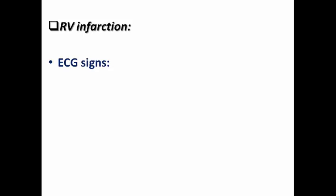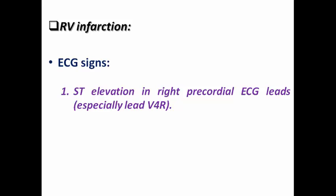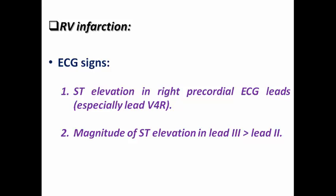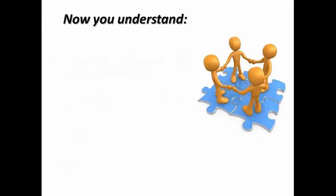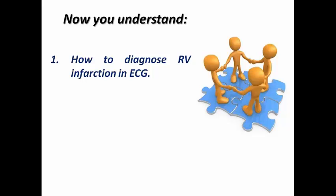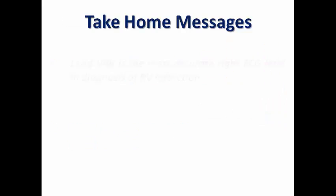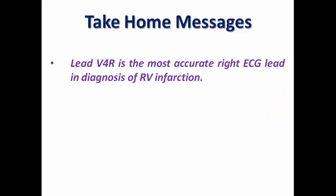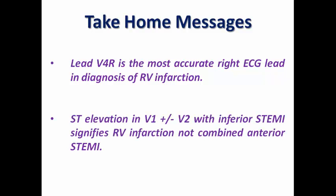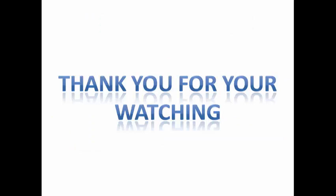To summarize the ECG signs of RV infarction: first, ST elevation in right precordial ECG leads, especially lead V4 right; second, magnitude of ST elevation in lead 3 greater than in lead 2; and third, ST elevation in V1 more than 2 mm, plus or minus V2. Our take-home message: lead V4 right is the most accurate right ECG lead for diagnosing RV infarction, and ST elevation in V1 plus or minus V2 with inferior STEMI signifies RV infarction, not combined anterior STEMI. Thank you for watching.